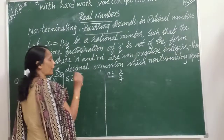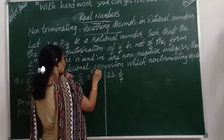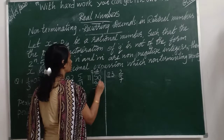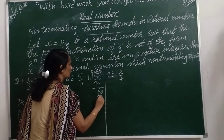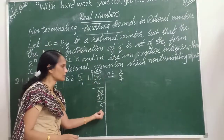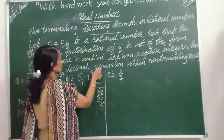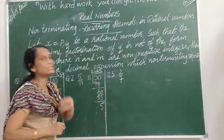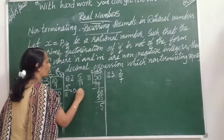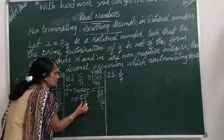Let us see this example: 5 by 11. We have to start with the decimal. We get 0.4545... — the digits 4 and 5 keep repeating. When we again reach the same dividend, it is certain the same digits will repeat. So 5 by 11 equals 0.4545 and so on. We can write this as 0.45 bar, meaning this block is repeating.